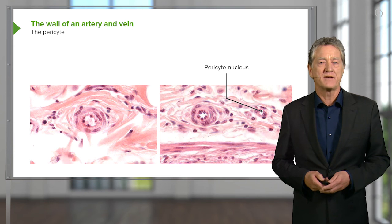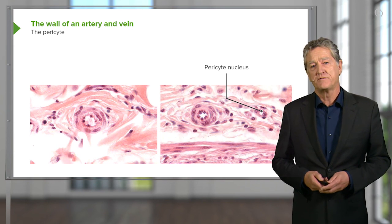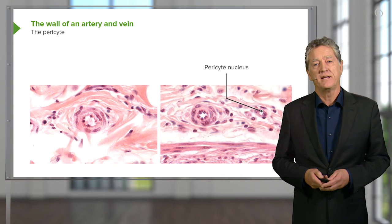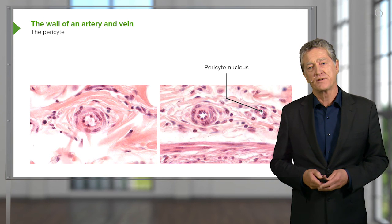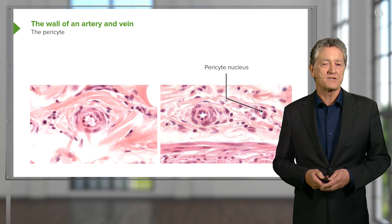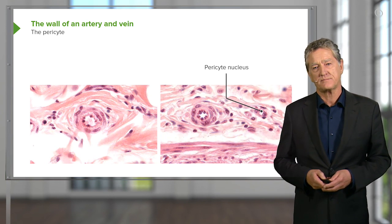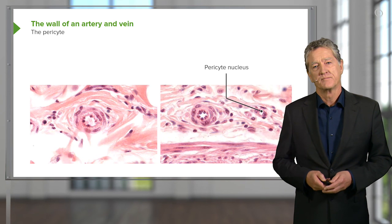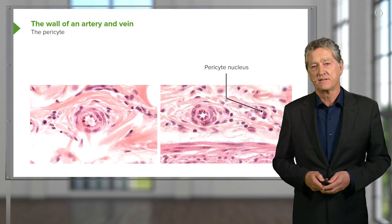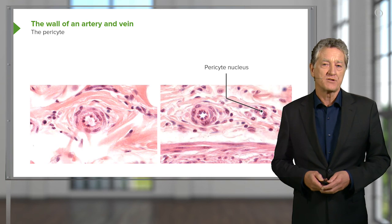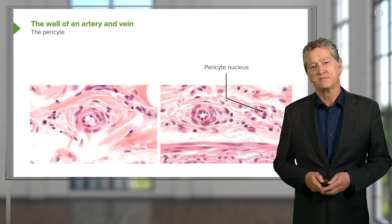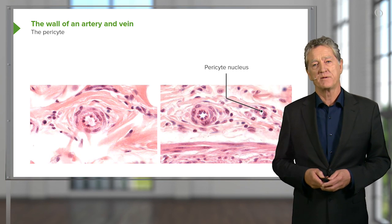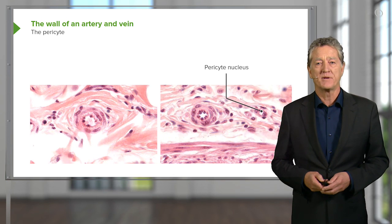These pericytes also have other functions. They're said to be able to divide and actually turn into smooth muscle cells or adventitial cells in situations where the capillary bed may be expanding and growing further. They are actually surrounded by what we call the basal lamina of the endothelial cell. Because the pericyte shares the basal lamina of the endothelium, it's actually not a connective tissue cell—even though we sometimes refer to them that way. Being separated from connective tissue elements by this basal lamina means they're really epithelial.